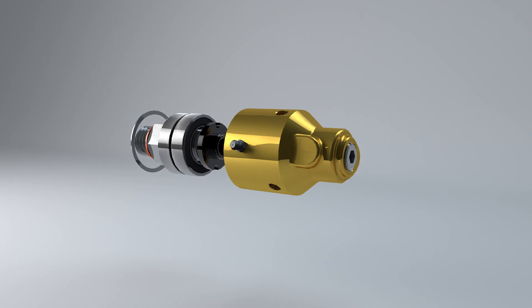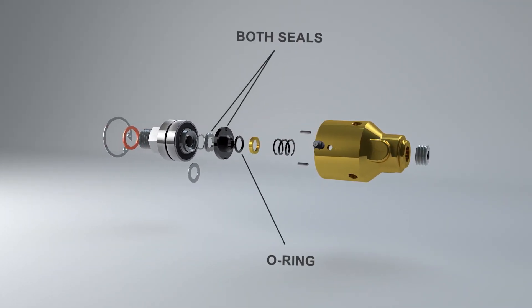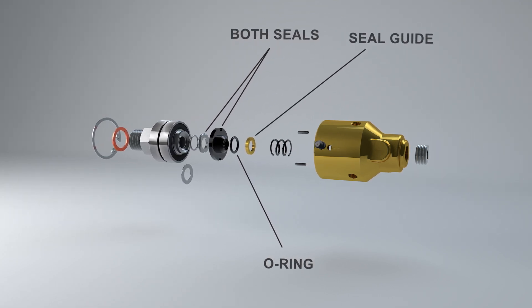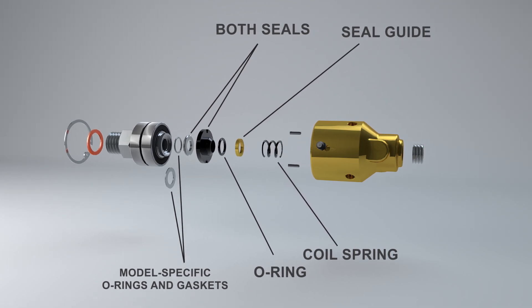The C-Kit can be used to replace both seals, the O-Ring, the seal guide, and the coil spring, as well as model-specific O-Rings and gaskets.